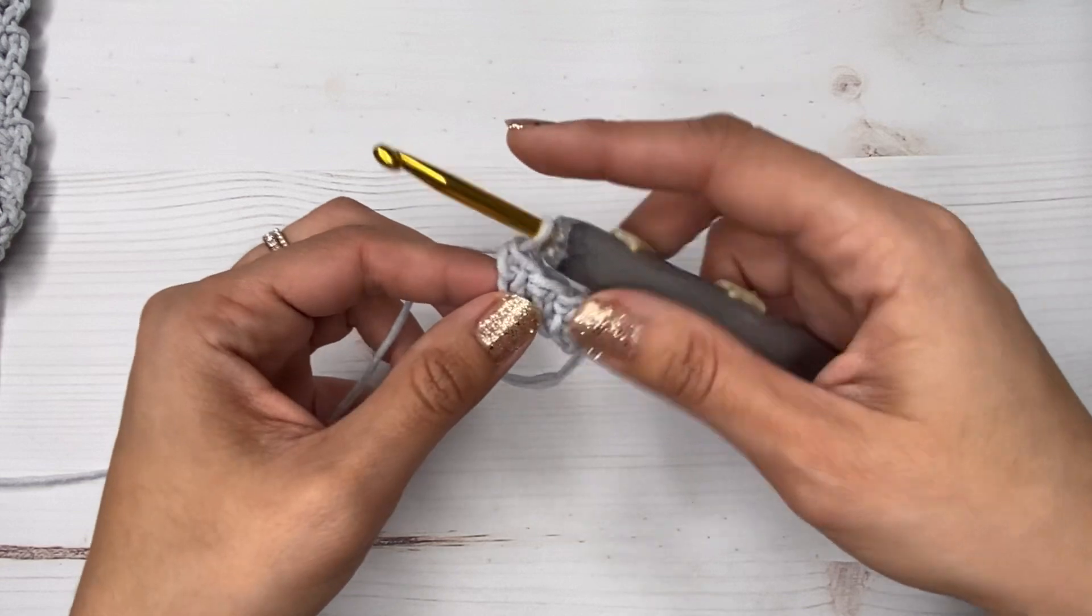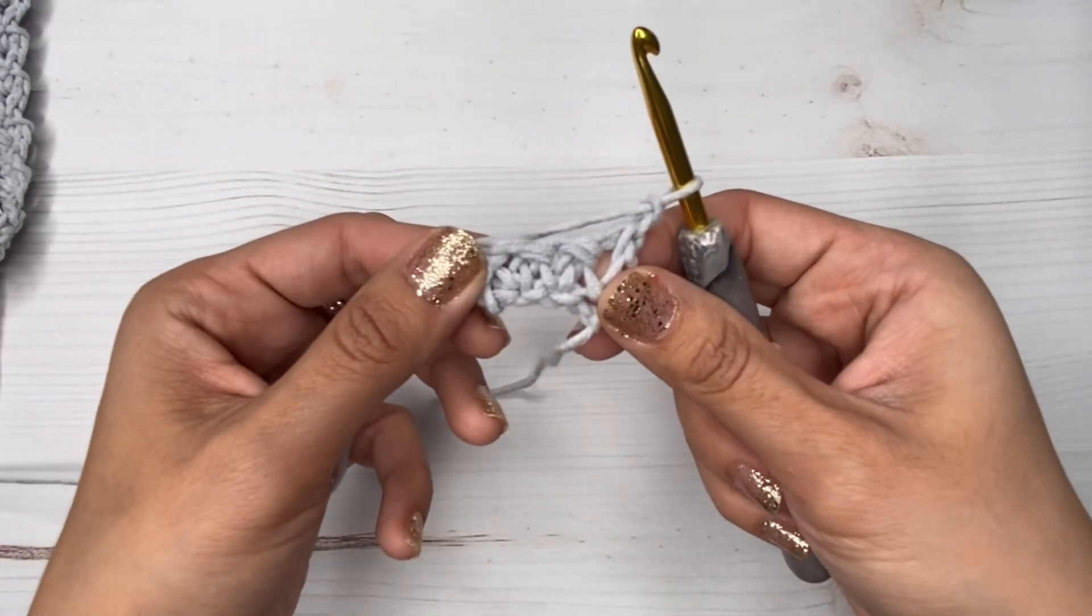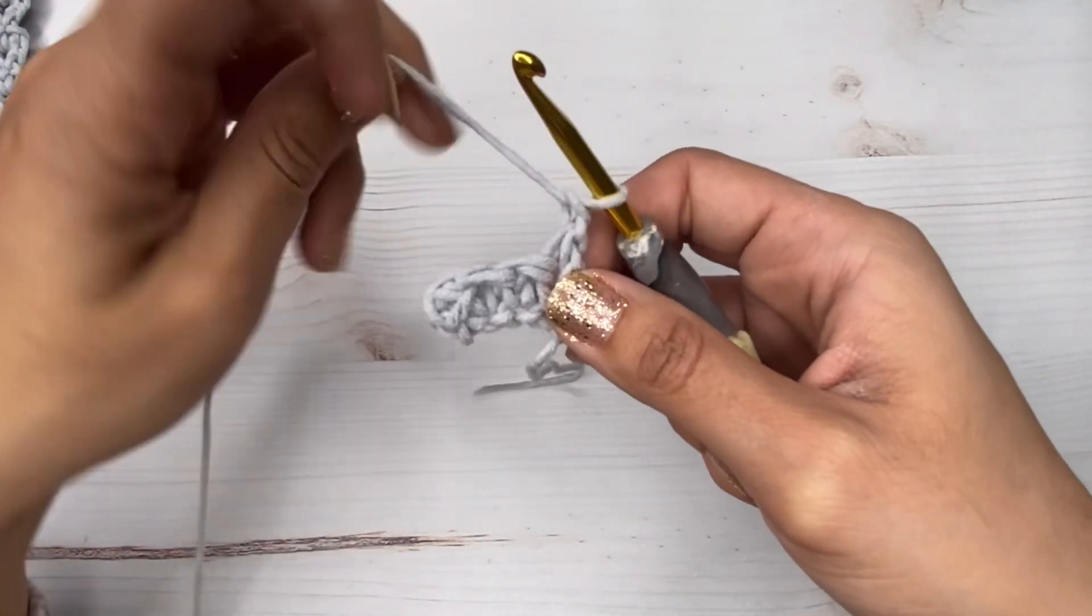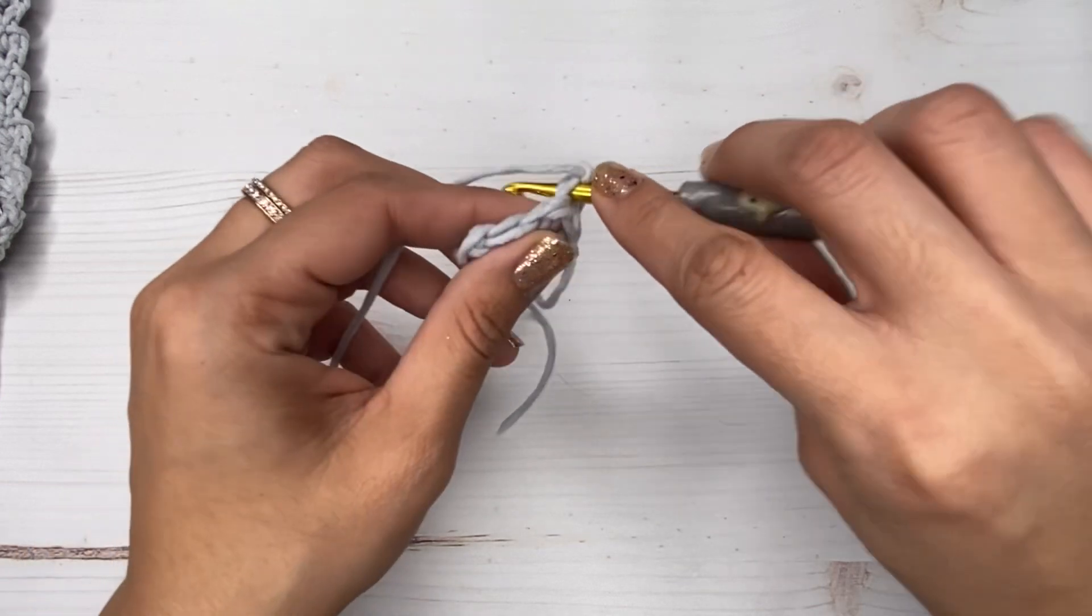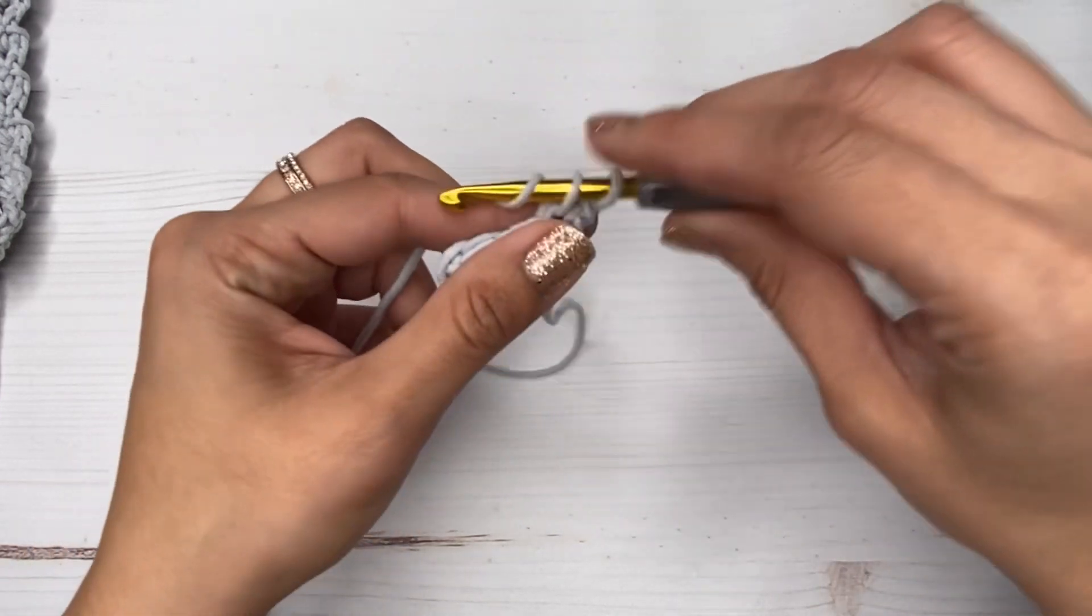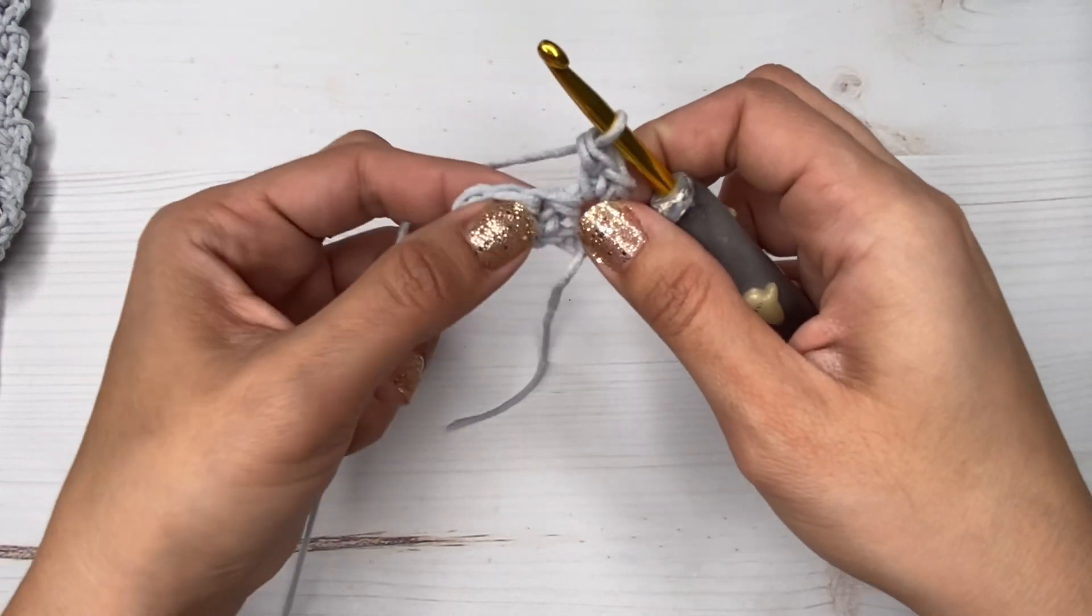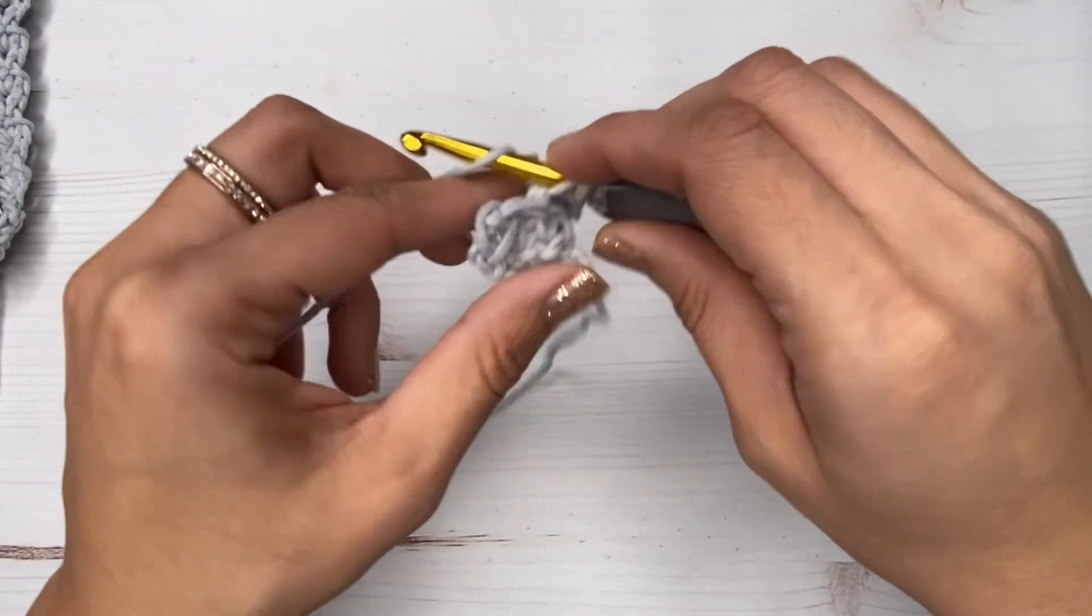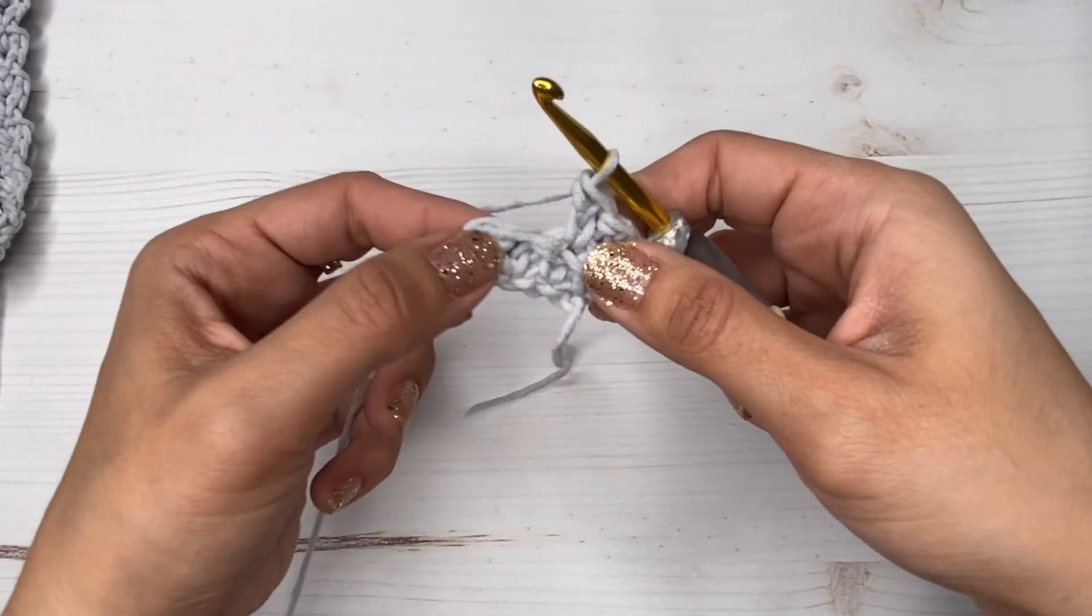All right, so once we get to the end, we're going to chain one and then on that first stitch here we're going to make an extended single crochet. So you're just going to do an extended single crochet all the way across, and you should have four stitches left at the end of each row.